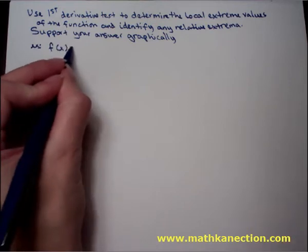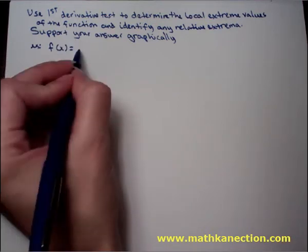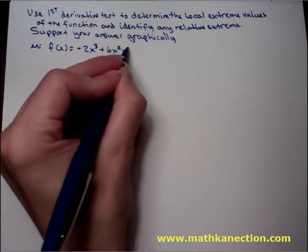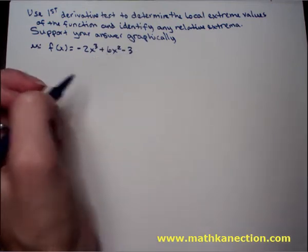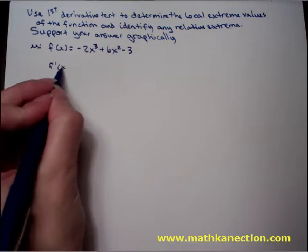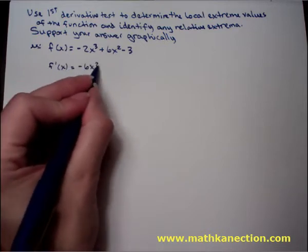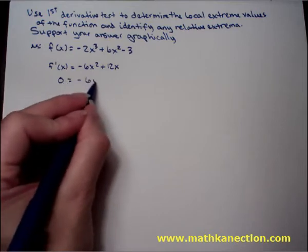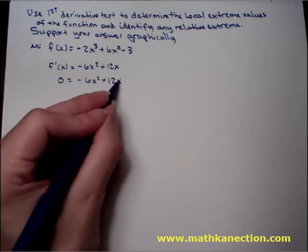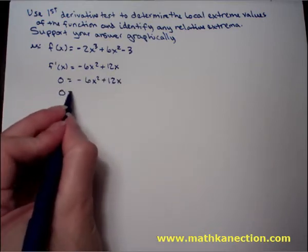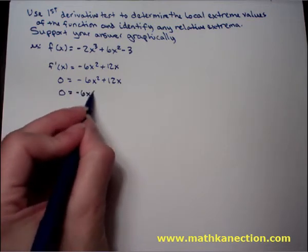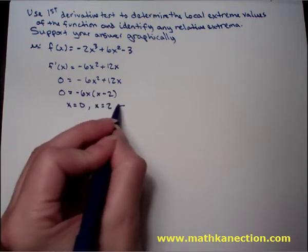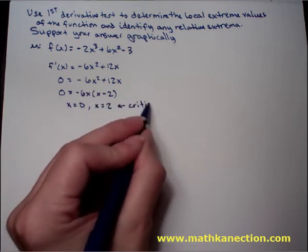To use the first derivative test to find local extrema, we have f(x) = -2x³ + 6x² - 3. Then f prime(x) = -6x² + 12x. Setting the derivative equal to 0 — we do not need to consider 'does not exist' because we have a polynomial. Factoring out -6x, we get x = 0 and x = 2 as the critical numbers for f(x).